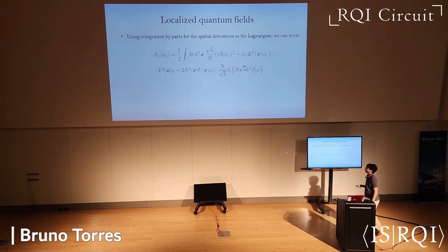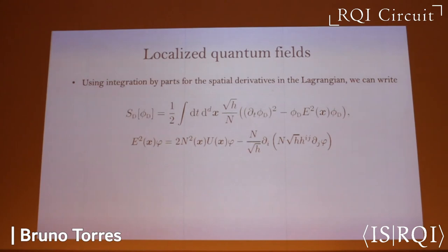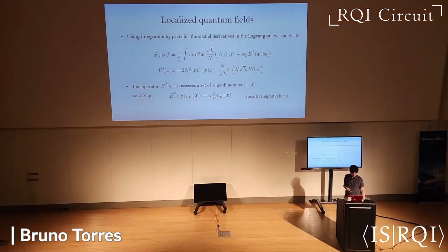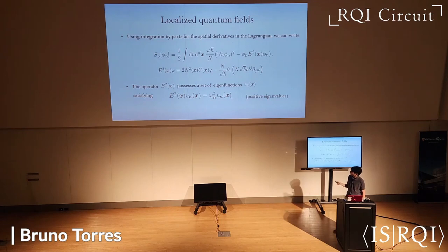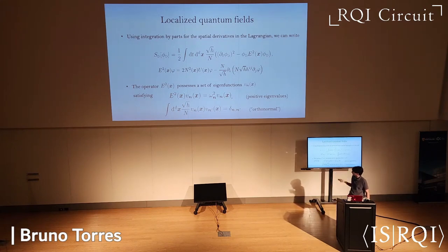Under those conditions, all admissible field configurations decay sufficiently far away in spatial infinity, so I can integrate by parts the spatial parts of the Lagrangian and obtain an operator E squared that is purely spatial. Because the theory is stable, the eigenvalues of E squared are all positive, so I can write them as these manifestly positive-definite quantities denoted by ω². The set of eigenfunctions — which I can take to be real — satisfy an orthogonality condition with a modified inner product chosen so that E squared is Hermitian with respect to it.